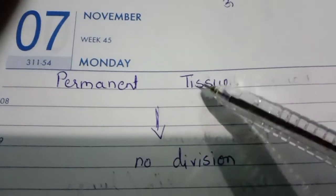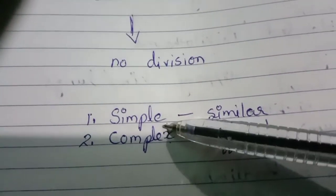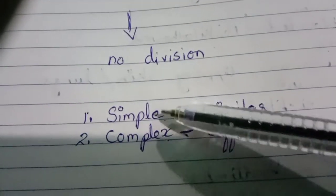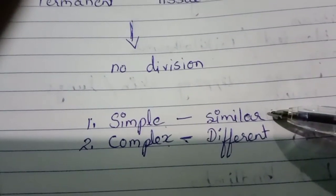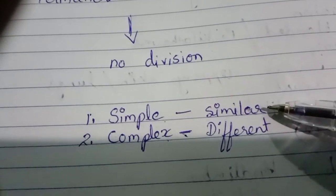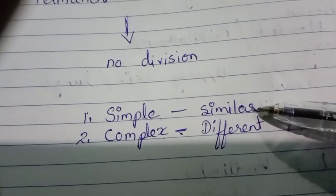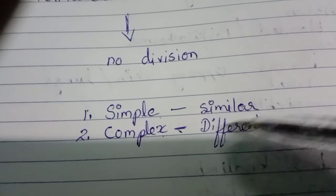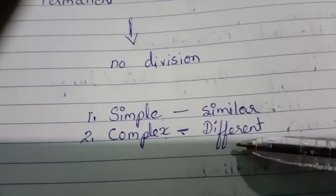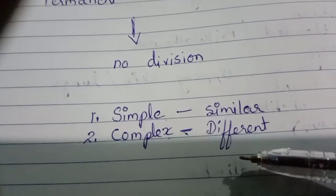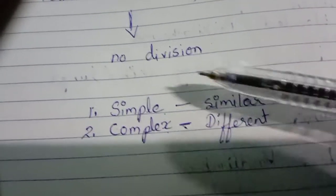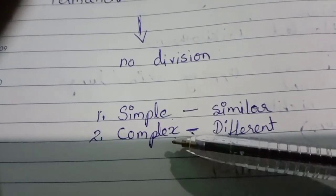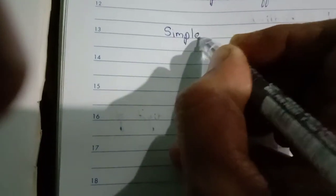Permanent tissue is of two types: simple and complex. Simple permanent tissue has similar types of cells — the same structure and showing the same function. Complex tissue means they have a number of different types of cells.